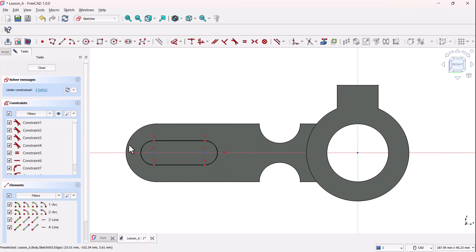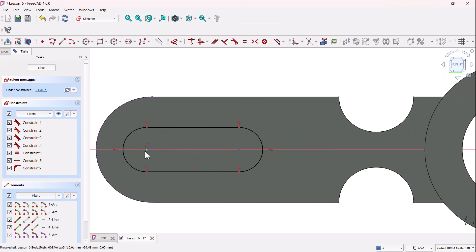But wait, we need the center of this arc to match the larger one here. Problem is, we can't directly select it. So, let's use the external geometry tool. Click on the edge of the larger arc and FreeCAD will project arc and its center point into our sketch.